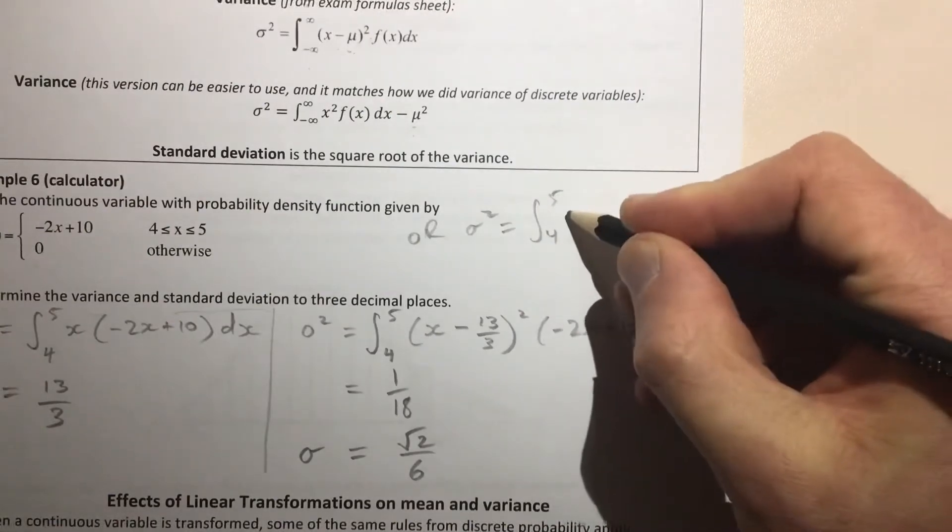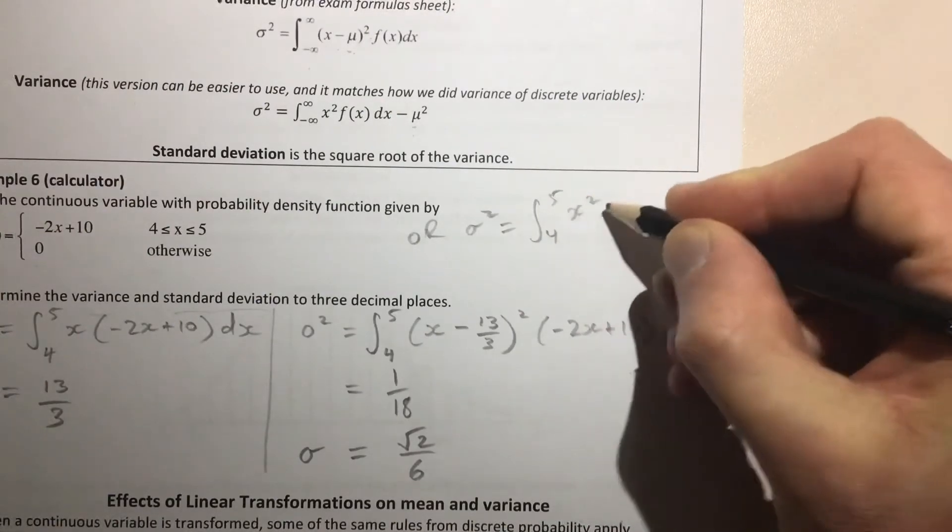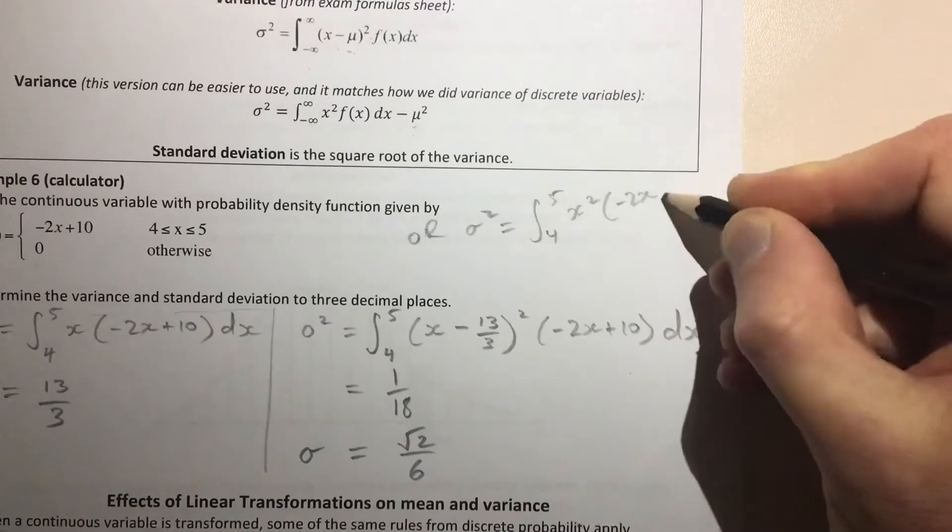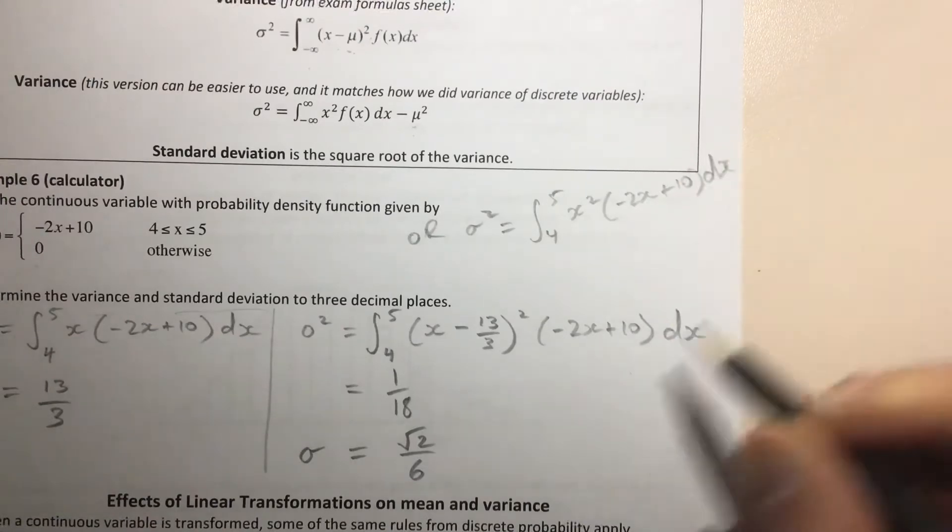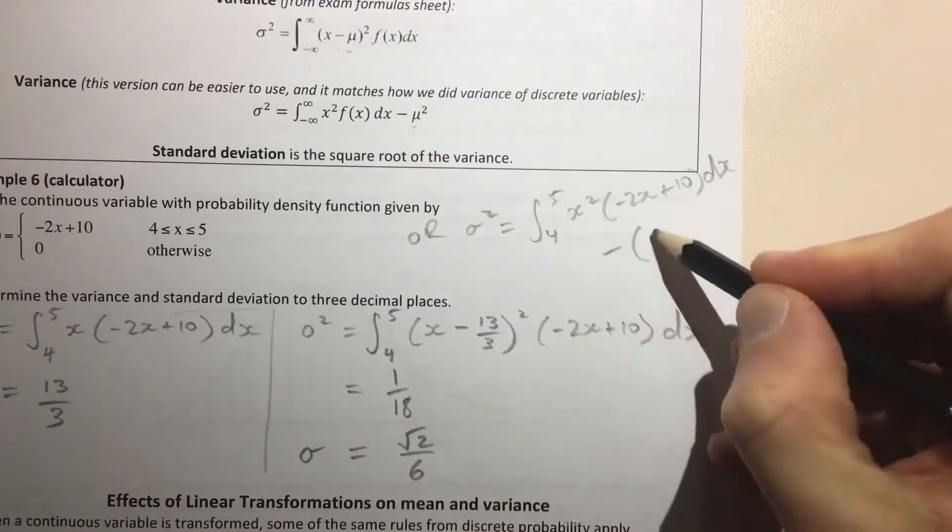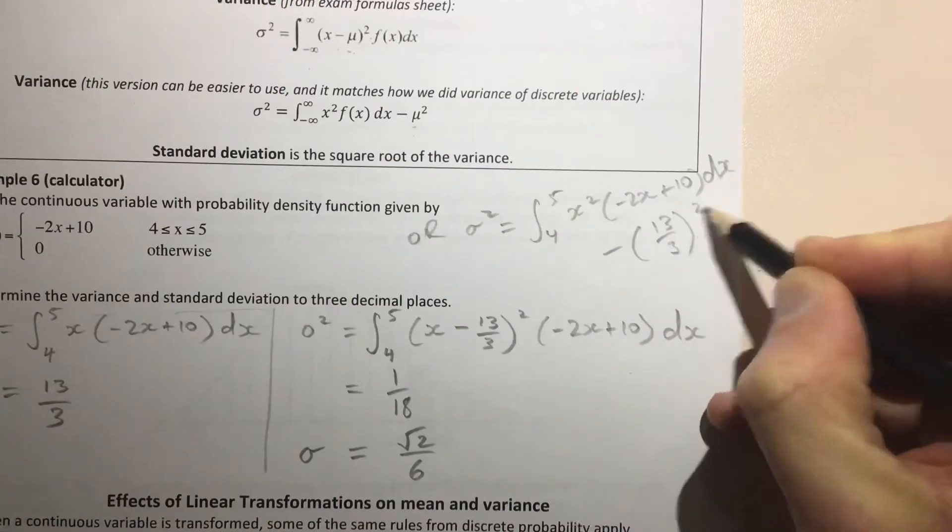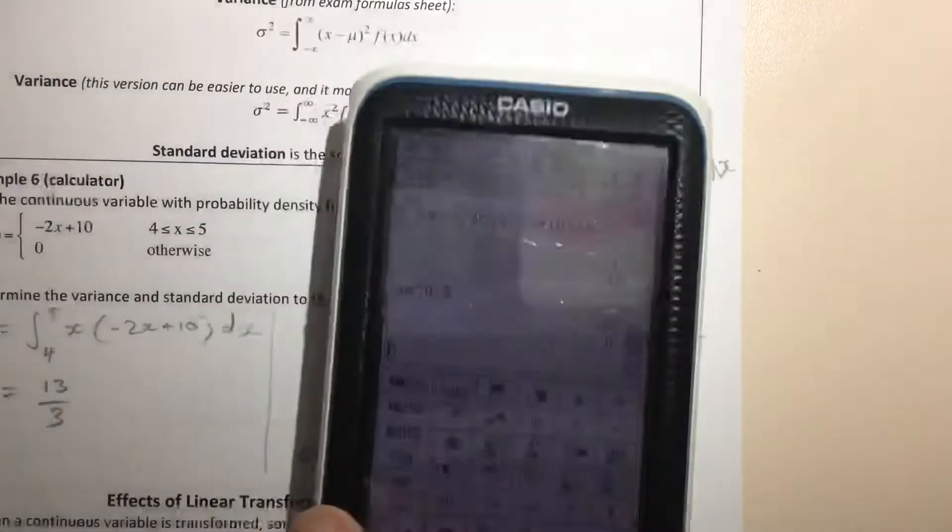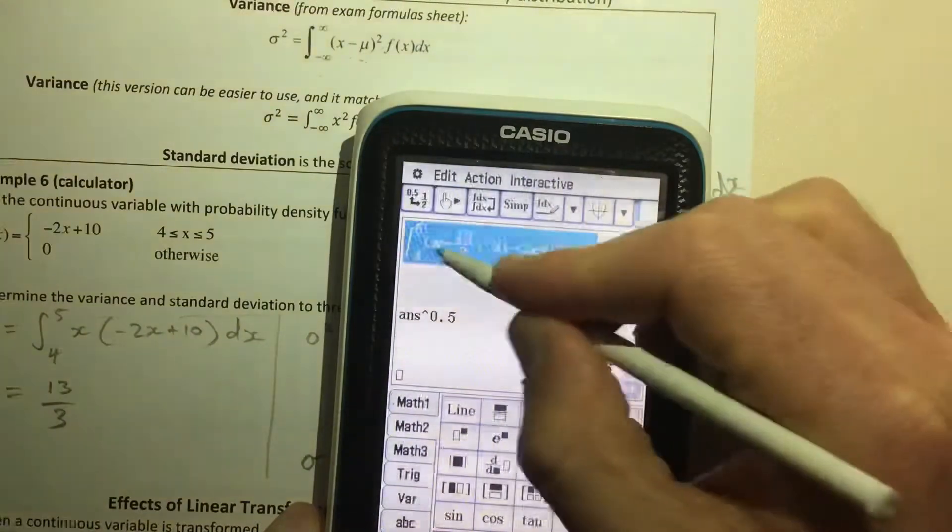the integral from 4 to 5 of x² times -2x + 10 with respect to x, right, so that's that part, minus (13/3)². Just to prove to you that I'm not making that up, we take this down here,